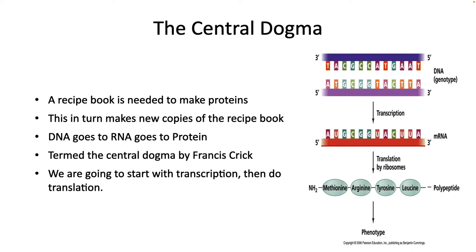The central dogma. Before we get into details, let's think about the overall picture. Enzymes, mostly proteins, carry out all of the functions of the cell. You need to remember how to make these proteins, so you need to store these recipes somehow. You also need the biological machinery to take the recipes you have stored and convert them into proteins.